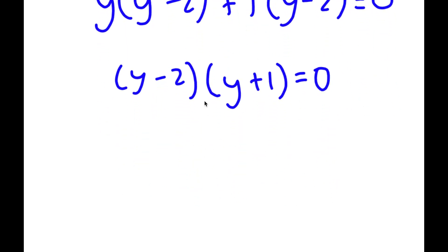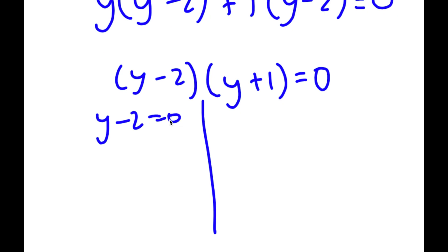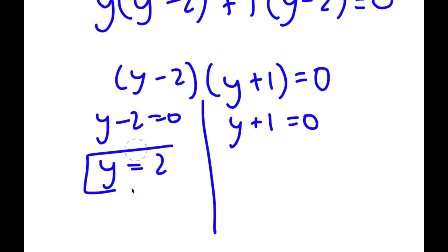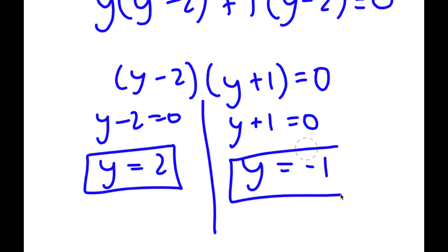So now this gives me two equations. I have y minus 2 is equal to 0, and I have y plus 1 is equal to 0. So for y minus 2 equals 0, y is simply equal to 2. And for y plus 1 equals 0, y is equal to negative 1.